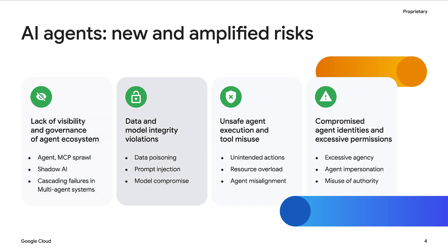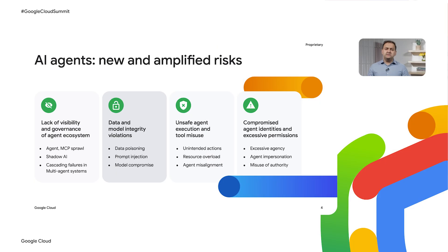The second risk category is data and model integrity violations. These include AI training and tuning data poisoning corrupting agent behavior, direct model compromise leading to flawed agent decisions, and prompt injection enabling sensitive data exfiltration or generation of harmful content, resulting in significant data loss or brand damage. Organizations need a solution that can ensure end-to-end security and integrity of data in AI and protect AI models from compromise or misuse.